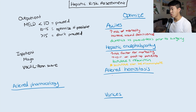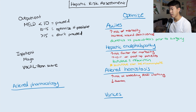Patients with cirrhosis are going to have altered hemostasis, with both increased risk of bleeding and clotting. This occurs because of thrombocytopenia from reduced thrombopoietin, splenic sequestration of platelets, and decreased production of clotting factors made in the liver.